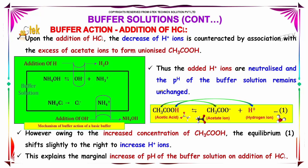Here you can parallelly find the mechanism of buffer action of a basic buffer. We have ammonium hydroxide here. This gets the addition of H, so it becomes H2O, and we will be having NH4+, the ammonium ion. In the same way, ammonium chloride provides Cl- and ammonium hydroxide with the addition of NH4+.